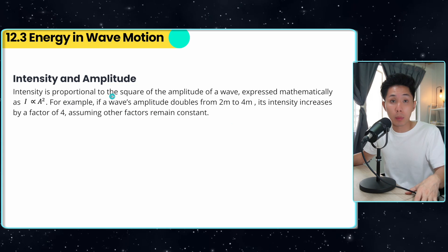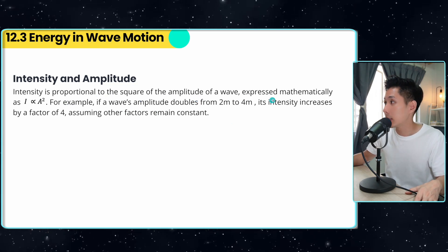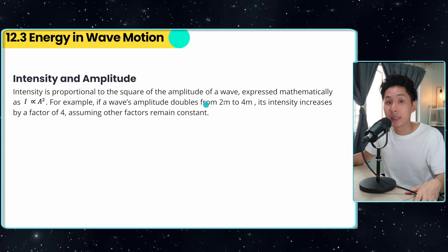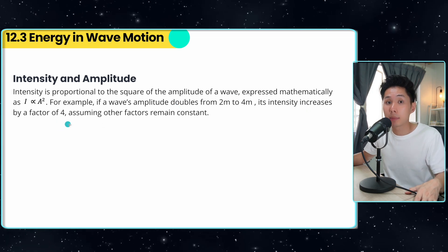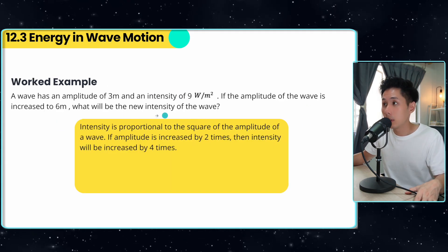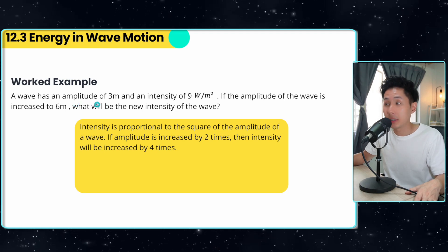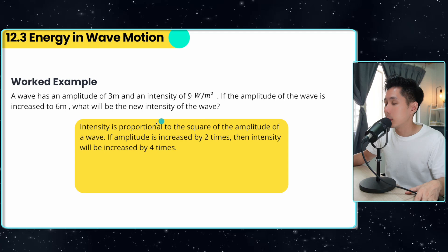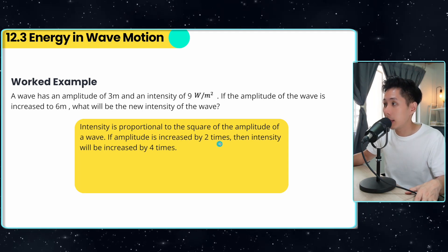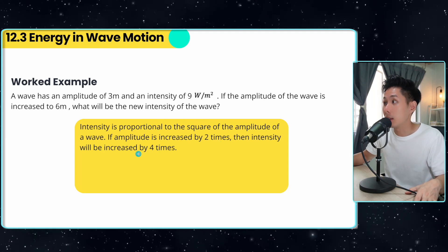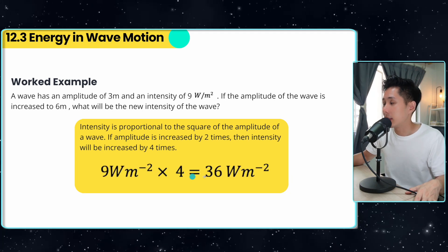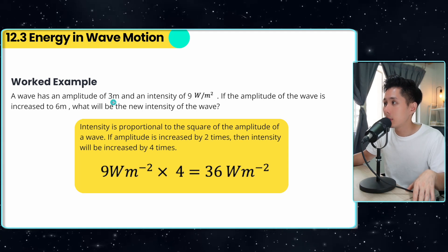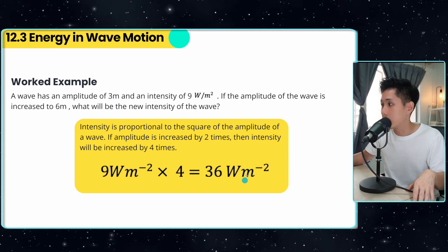Intensity is also proportional to the square of the amplitude, expressed mathematically as I ∝ A². So if a wave's amplitude is doubled, the intensity increases by a factor of four. For example, a wave has an amplitude of 3 metres and an intensity of 9 units. If the amplitude is increased to 6, the new intensity is found by the ratio: 3² = 9 and 6² = 36, so the new intensity is 36 units — four times larger.